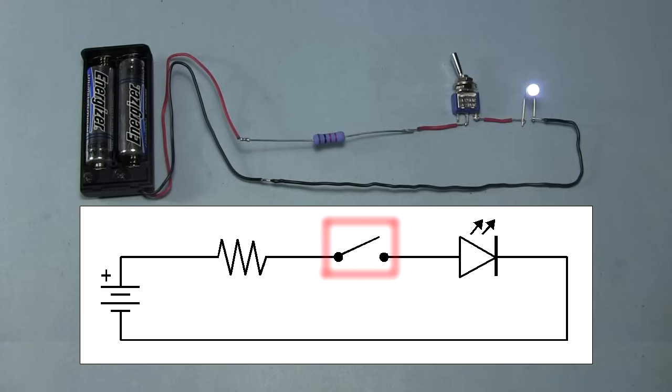The international standard is to draw it as a rectangle like this. The on-off switch is drawn like this. Here it's drawn open, or off. If it's closed, or on, then it would look like this.